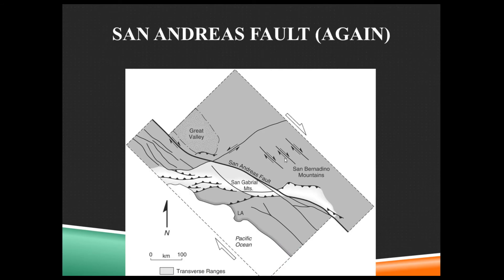We can see on an actual fault map along the San Andreas — the dark black line running through the middle — that there's a restraining bend, and so there are reverse faults all around it. At this map scale you can't see the reverse faults within the fault zone, but you can see that extending far out from the fault there can be reverse faults to help accommodate all of that compression. The longer a strike-slip fault system exists with a large restraining bend, the more the reverse faults extend further and further away from that strike-slip fault.